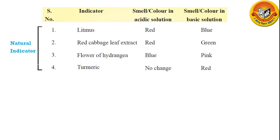The second natural indicator is red cabbage leaf. These red cabbage leaves are red in color when put in acids, and their color changes to green when put in a basic solution. Their original color is red.